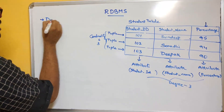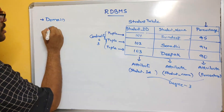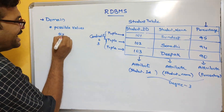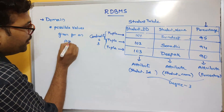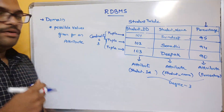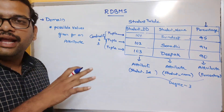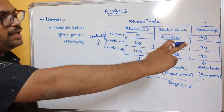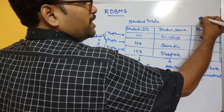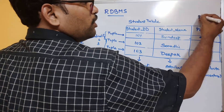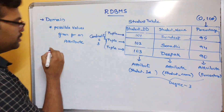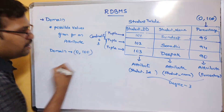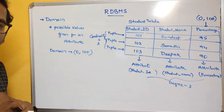The next terminology is domain. Domain means all the possible values that can be given for an attribute. For example, consider the percentage attribute — percentage will be between 0 and 100. So the domain for percentage is 0 to 100. The possible values given for an attribute is called a domain.